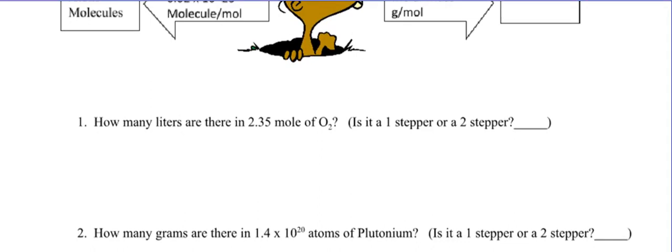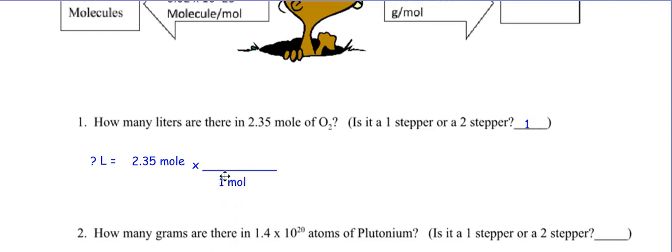How many liters are there in 2.35 moles of oxygen? Is it a one-stepper or a two-stepper? One. Why? I see the word mole right there. Go ahead, pause it, and when you're done, come back. Here's question mark liters equals 2.35 moles. It is a one-stepper, so I only need one conversion. What unit goes on the bottom? Mole — one mole. What unit do you want? Liters — that's always 22.4. It's on top, so I'm going to multiply. 2.35 times 22.4 gives me this number. I only need three sig figs — that's my answer.